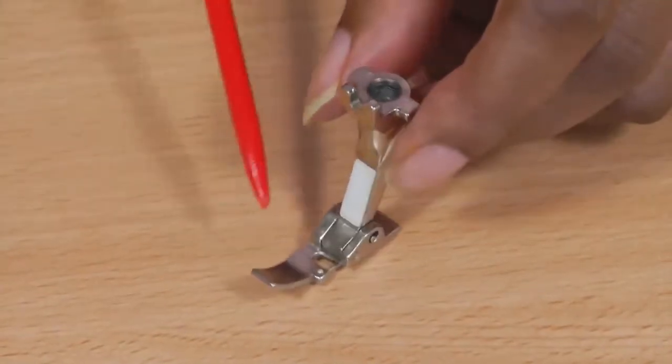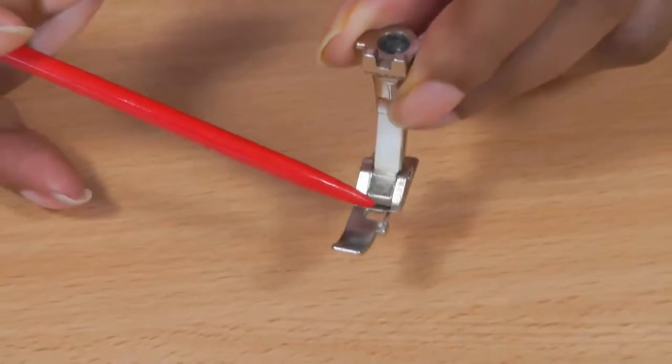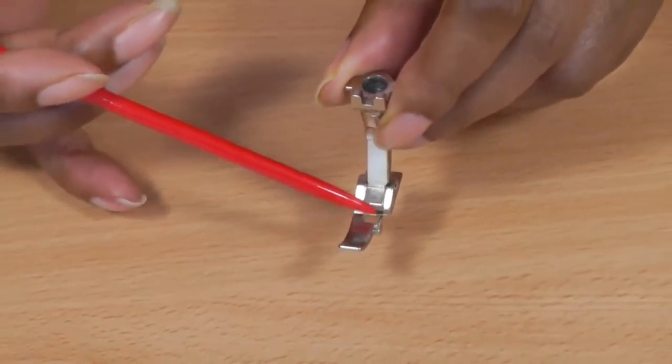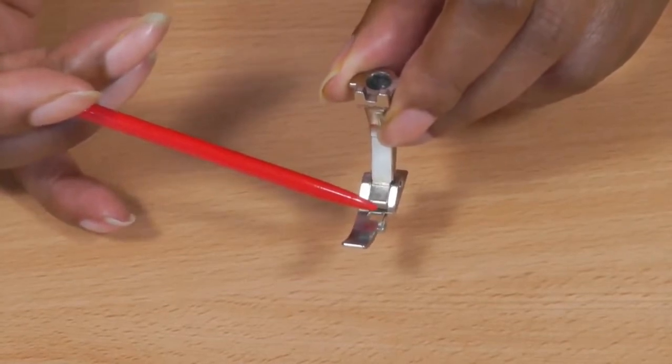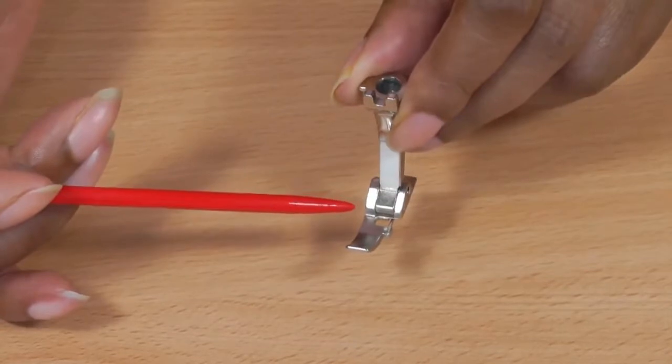This is what an overlock foot looks like. We concentrate in this area here and in the middle of the foot there is a little prong and that is what enables the overlock stitch in order for it to overlock a raw edge or provide you with a decorative stitch for a sewing project.